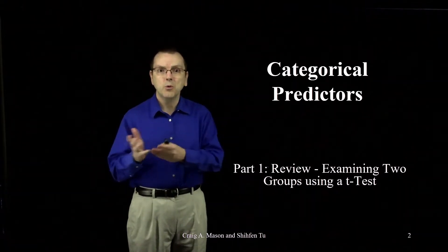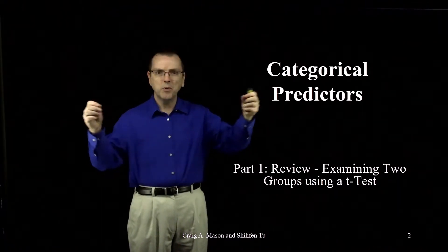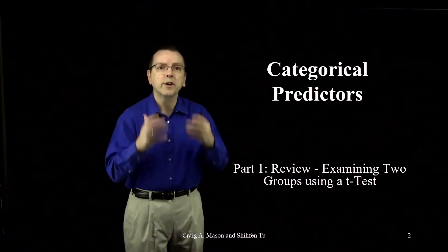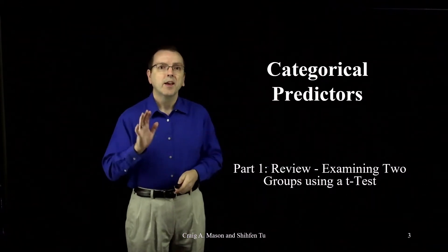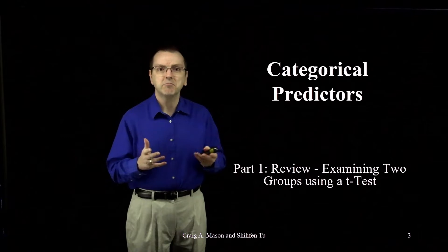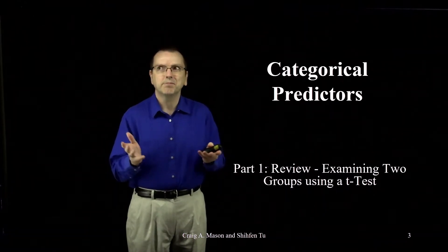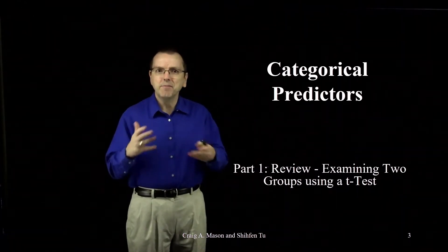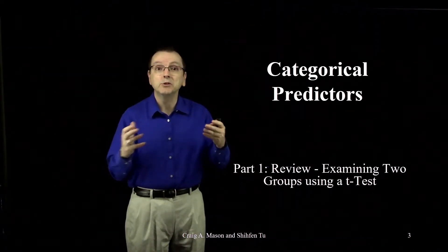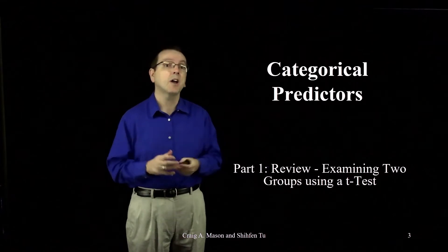There's no continuum or range of scores. There's no inherent ordering to the groups. Things like race, ethnicity, college major, the state in which you live. They have no inherent order, no sequence or numerical values tied to them.